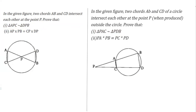In the first part, we need to prove two specific triangles similar. On one side we have one triangle, and on the other side the bigger triangle. We are going to use the Angle-Angle (AA) similarity condition to establish this.